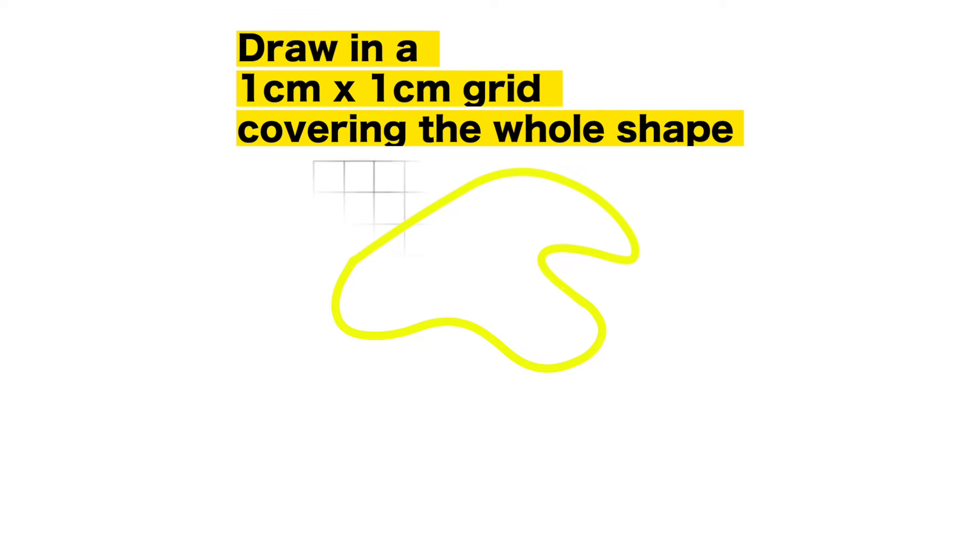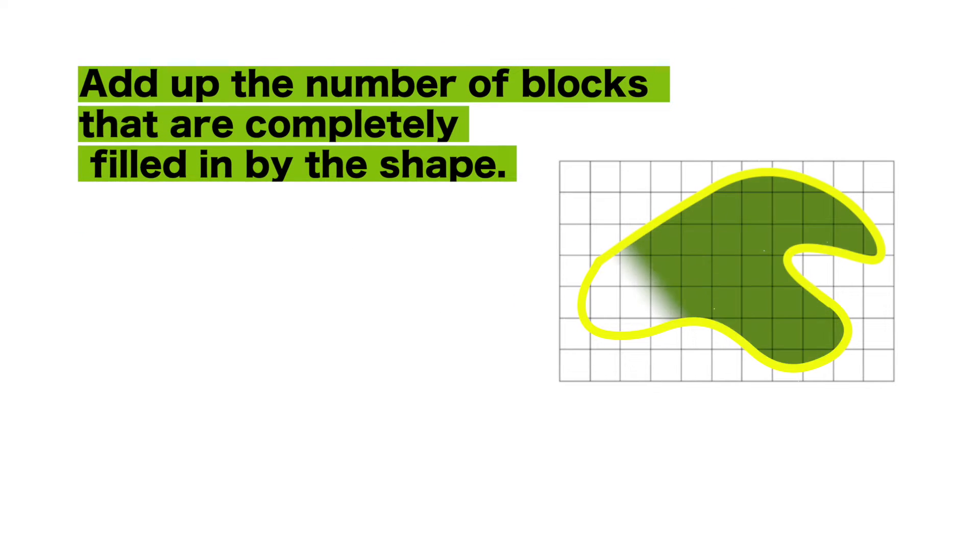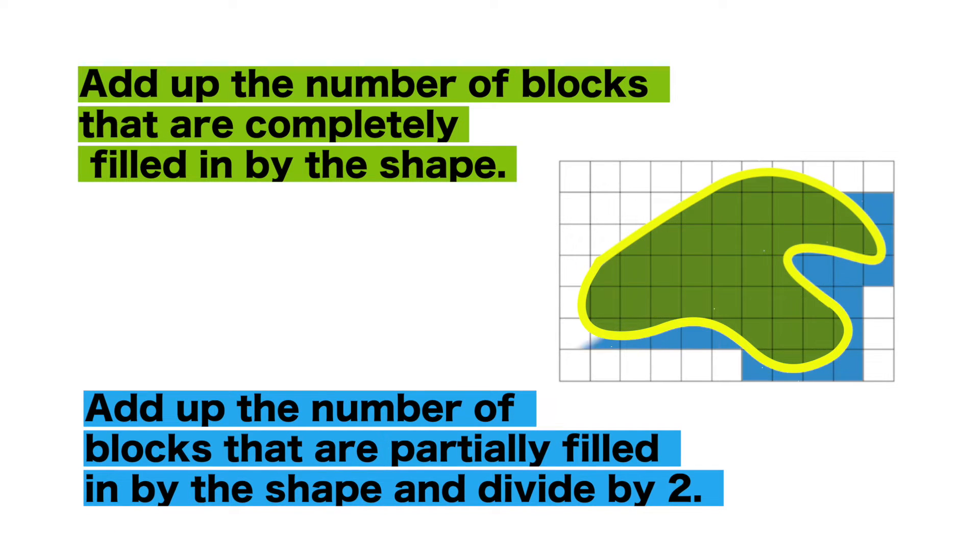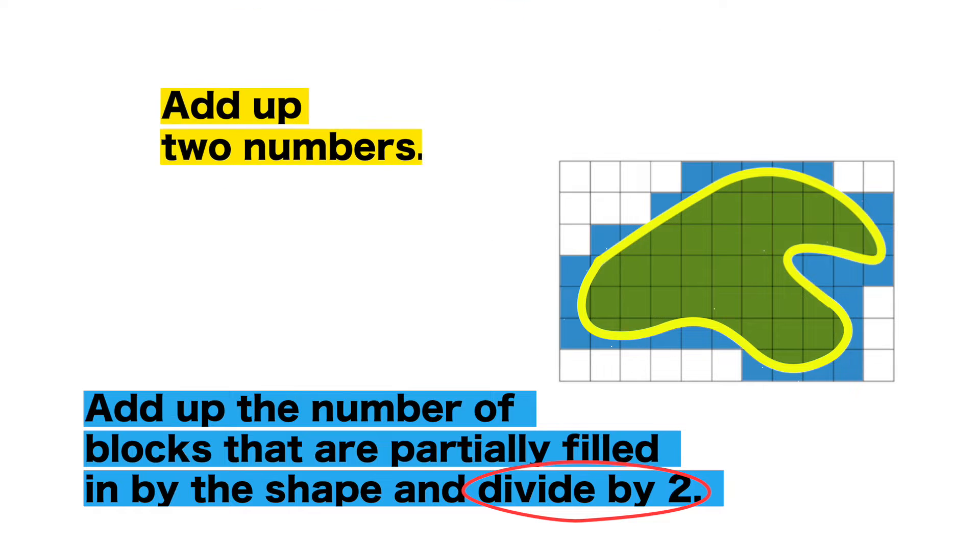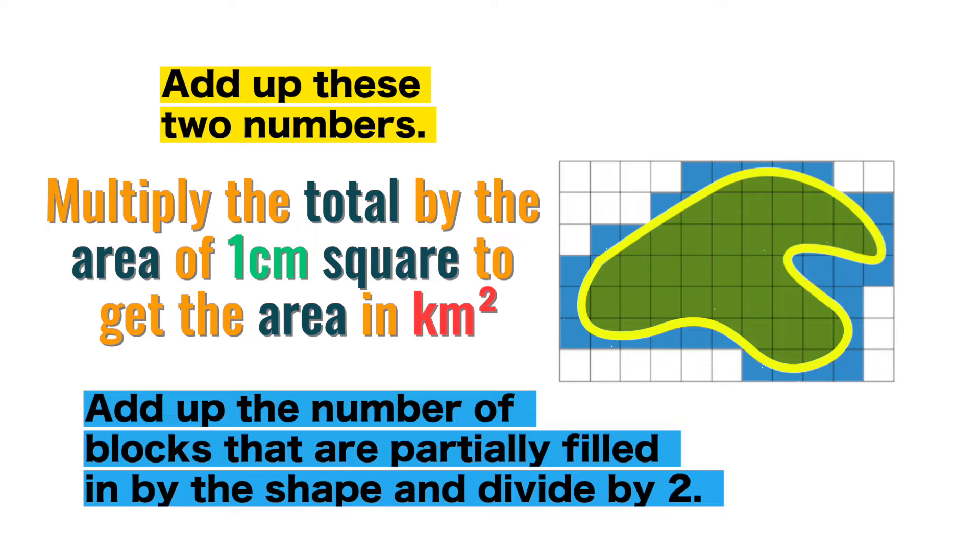The third shape is an irregular shape. So for an irregular shape, what you first need to do, is to draw in a 1 by 1 centimetre grid covering the whole shape. Then you add up the number of blocks that are completely filled in by the shape. After that, you add up the number of blocks that are partially filled in by the shape, and then you divide that number of blocks by 2. Then you add these two numbers together. You then multiply the total by the area of 1 centimetre square, to get the area in kilometres squared.